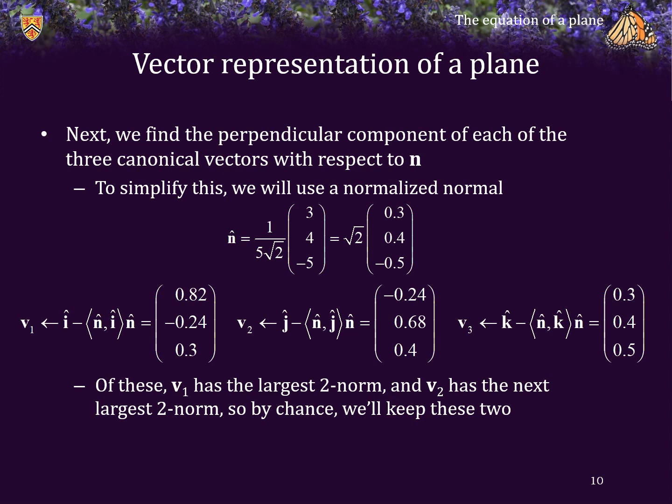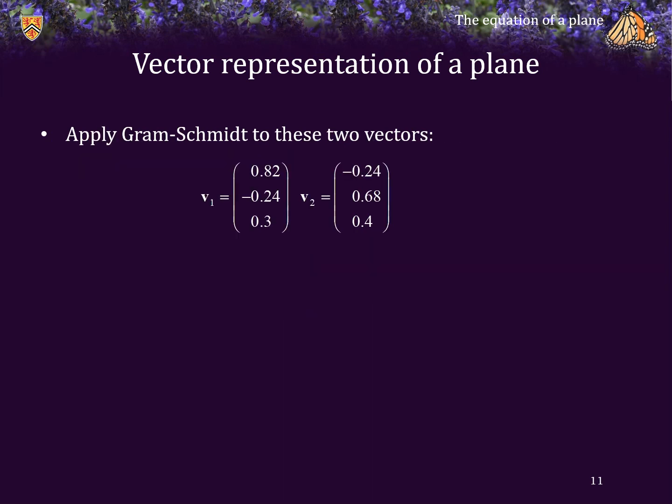However, it could have happened that V3 was the largest with the 2-norm, and V1 had the smallest 2-norm, or perhaps V2. It doesn't really matter, but in this particular case, by chance, it happened that V1 had the largest 2-norm, V2 had the second largest.